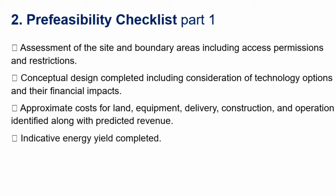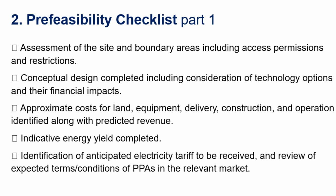An indicator of energy yield completed — given the site conditions, temperature, and so on, you can do a temperature estimation with software to find the operation temperature. With irradiance tables — either from software like Meteonorm, GIS, or ground measurements — you can give first estimations of the energy yield and also the financial yield. Identification of the anticipated electricity tariff and review of expected terms and conditions of the PPA in the relevant market. For example, in Germany they buy any kilowatt-hour generated independent of the time, while other countries require a certain number of full load hours per year, or give different tariffs for day and night time.